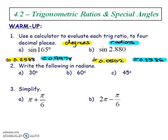This is a video on 4.2, which is trigonometric ratios and special angles. Now in grade 12, we're going to be dealing with the same types of questions we saw in grade 11. The only difference is we're actually now going to be in radians instead of degrees.